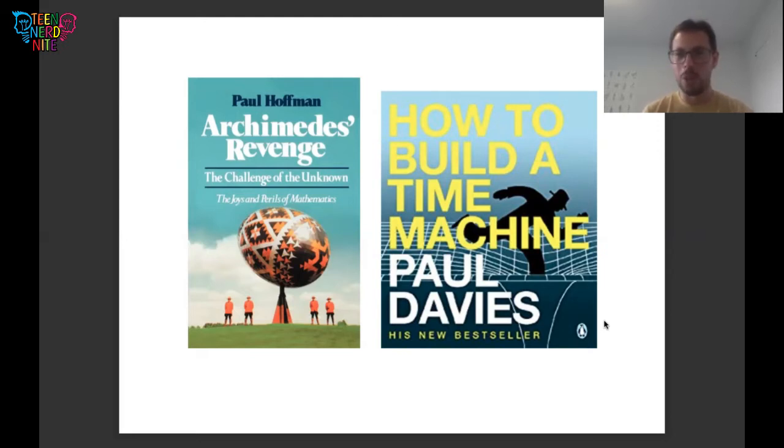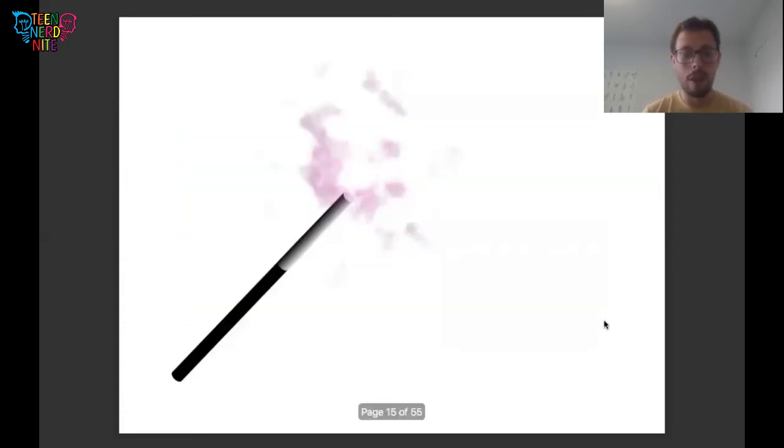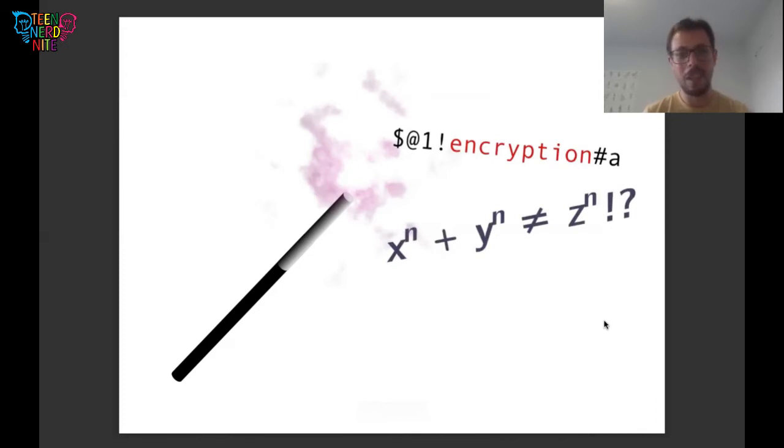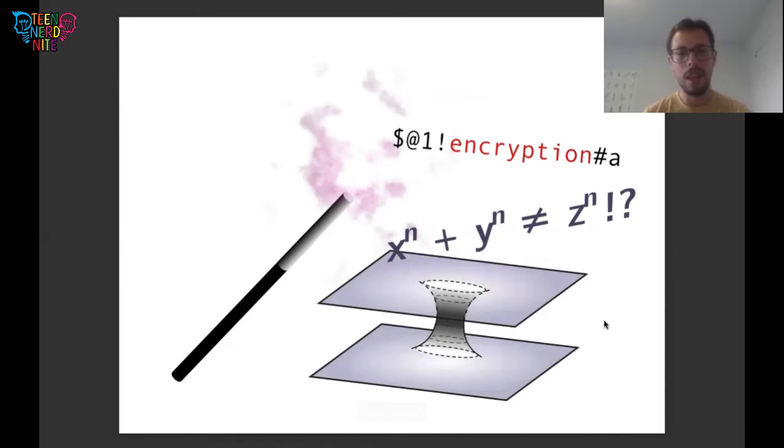These books made me realize that science was magic, and scientists were magicians. They could wave their wand and say some magic words like encryption, or write down some arcane formula like Fermat's last theorem, or just draw a picture like a wormhole, and achieve miraculous things. You could send a secret message, in some cases an unbreakably secret message. Fermat famously claimed that he could prove this theorem in the margins of a book. And if you could build a wormhole, then you could travel through time or have shortcuts between distant parts of the galaxy. All of this basically seemed like magic to me.